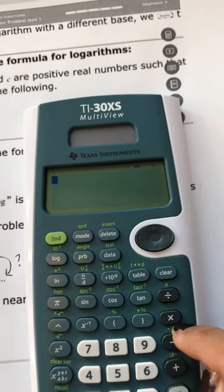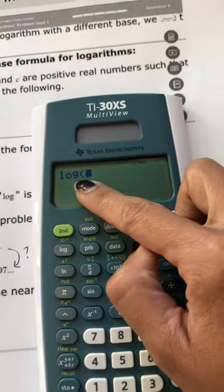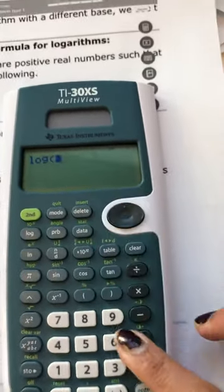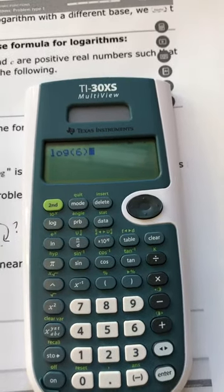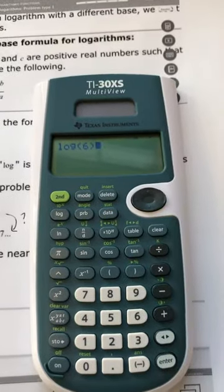Log 6, so go ahead and press log. Where's log? Log is right here. 6. So notice when you put log in, they open the parentheses, so when you put 6 you need to close that parentheses. Super important to close the parentheses because if you don't close it you're going to get the wrong answer.